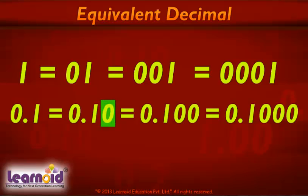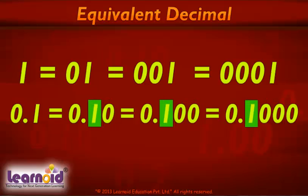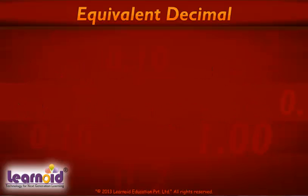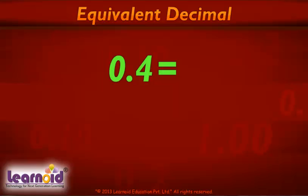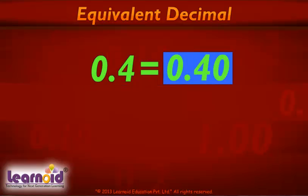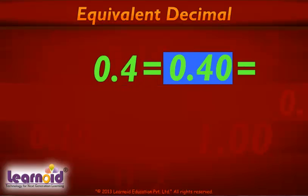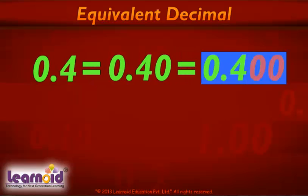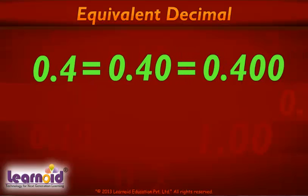In decimals, placing zeros to the right of the last digit after the decimal will not affect the value. Let's take an example: 0.4 — adding a zero after 4 will not change the value. 0.4 is the same as 0.40, 0.400, and so on.